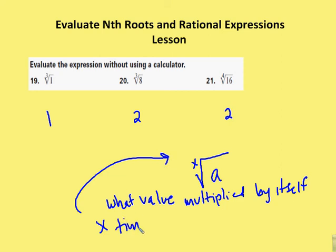So x is the index, is equal to a. And that's what I'm looking for. Okay, so what value multiplied by itself x times is equal to a. The value 2 multiplied by itself 4 times is equal to 16. The value 2 multiplied by itself 3 times is equal to 8. And the value 1 multiplied by itself 3 times is equal to 1.